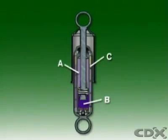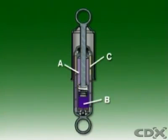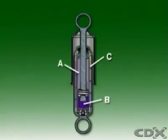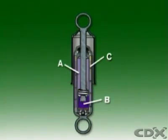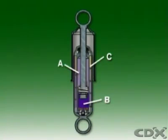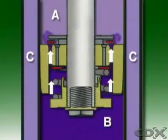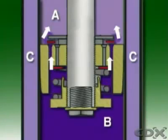On bump or compression, the piston and rod move downwards in the cylinder, resulting in a small pressure drop in the chamber labeled A above the piston. At the same time, the volume of the chamber labeled B below the piston is reduced, causing a high fluid pressure. This unseats the piston intake valve, and fluid flows up through the outer passages in the piston and into chamber A.